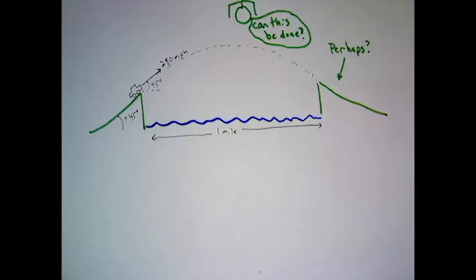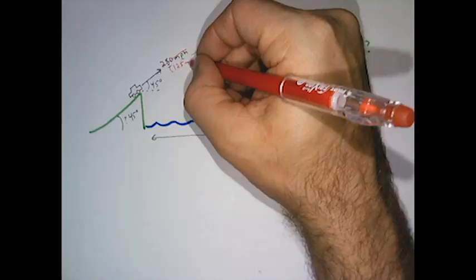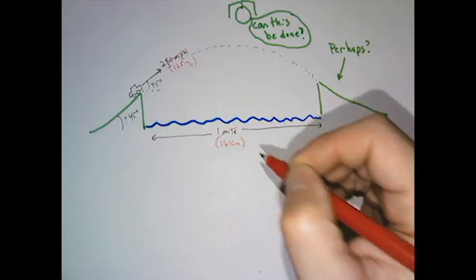Well, first of all, I'm going to take this problem and convert the English units to metric. So this would be given in a problem you'd have to solve. So instead of 280 miles per hour, we'll go 125 meters per second and 1610 meters instead of a mile.